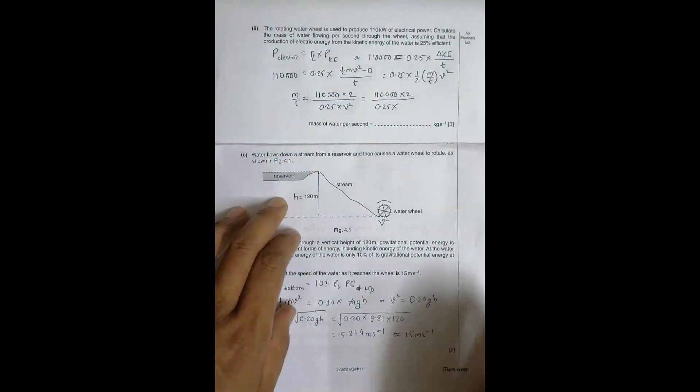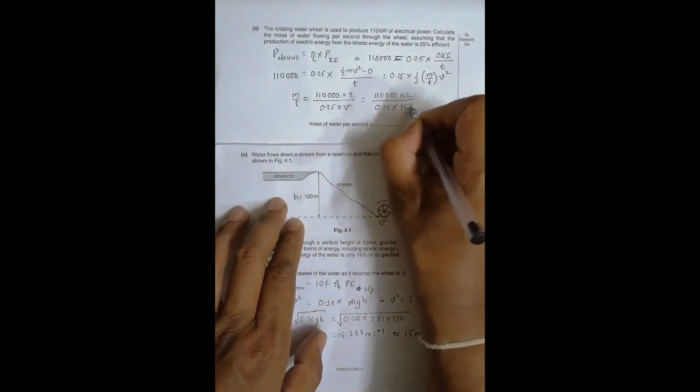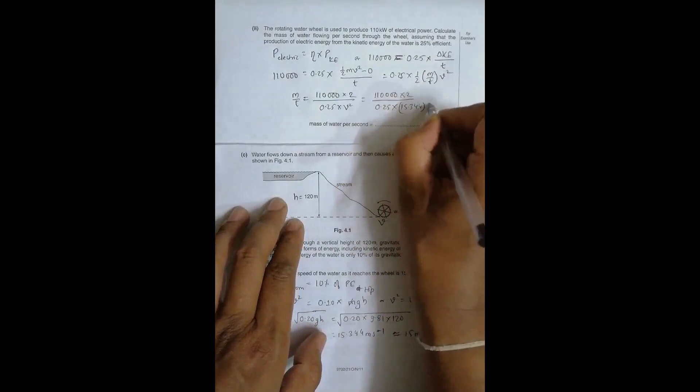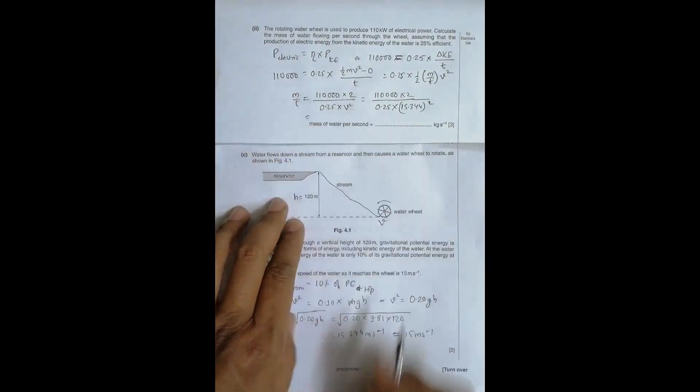And that's equal to 110,000 into 2 divided 0.25 into this V square is equal to, as we got from the previous question here, it is 15.344 square. So it is 15.344 square. So when I press this in the calculator, its value will be equal to,